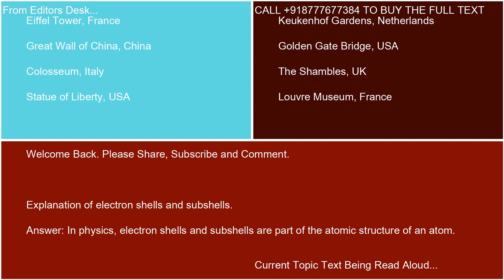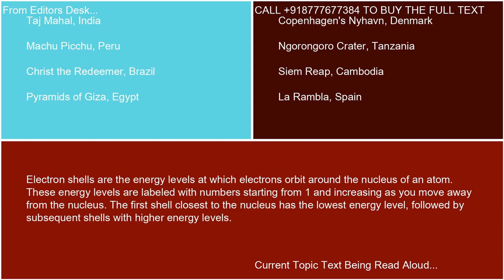In physics, electron shells and subshells are part of the atomic structure of an atom. Electron shells are the energy levels at which electrons orbit around the nucleus of an atom. These energy levels are labeled with numbers starting from 1 and increasing as you move away from the nucleus. The first shell, closest to the nucleus, has the lowest energy level, followed by subsequent shells with higher energy levels.